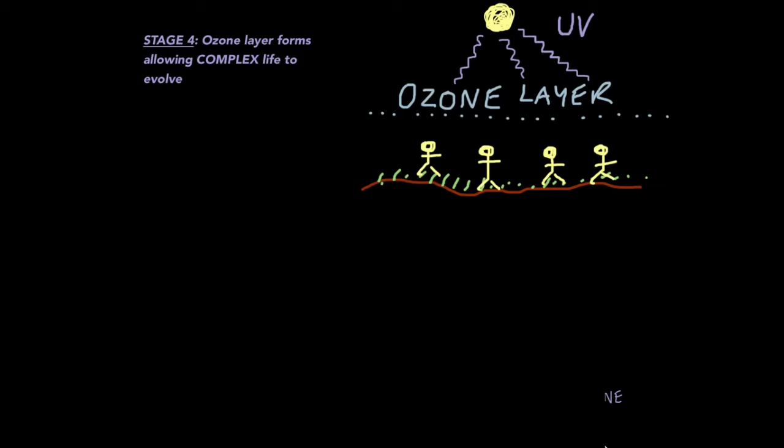If it wasn't for the ozone layer, the UV radiation would basically scour the surface of our planet, making it almost impossible for life to exist. So because UV radiation has been blocked by the ozone layer, complex life forms such as ourselves have been able to evolve.